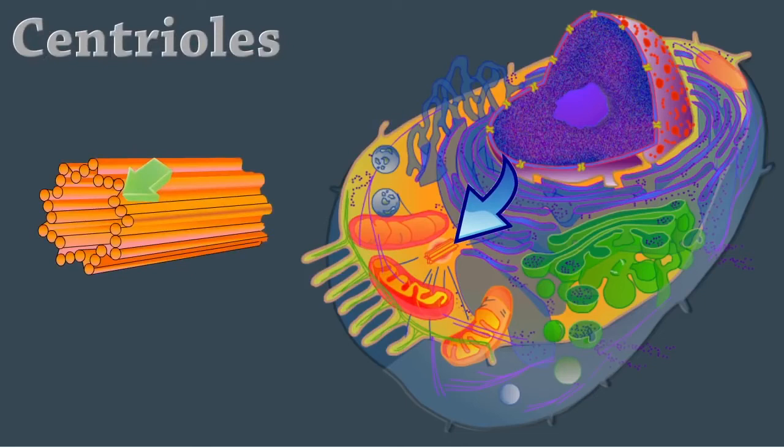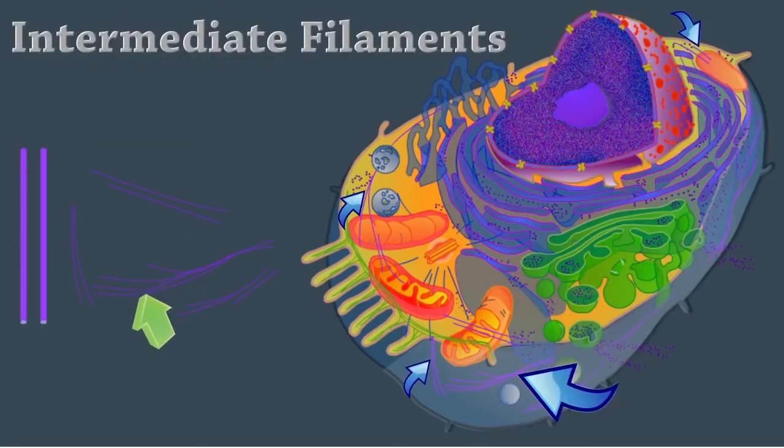Centrioles are paired cylindrical bodies. Each one is composed of nine triplets of microtubules. They organize a microtubule network during mitosis to form the spindle, asters, and basis of cilia and flagella. Intermediate filaments are protein fibers whose composition varies. These stable cytoskeletal elements resist mechanical forces acting on the cell.